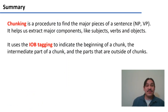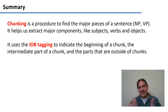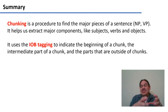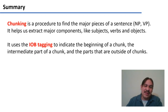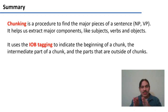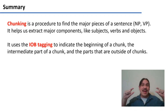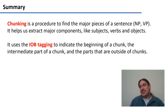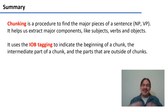As a summary for chunking: chunking is the procedure to identify only the major parts of a sentence, such as noun phrases and verb phrases. It helps us extract major components like subjects, verbs, or maybe just the nouns in a sentence. We use IOB tagging — I for intermediate, O for out, B for beginning of a chunk — and this leads to a flatter structure with less detail than constituency parsing. But maybe we don't need that much detail — just enough to get the computer to play Fleetwood Mac, play my music.